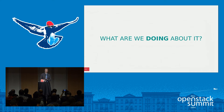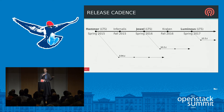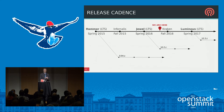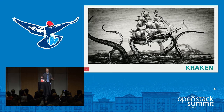The great thing about Ceph is that it's software and software can be upgraded. We have a regular release cadence — named releases every six months, in spring and fall. Spring releases are LTS releases with regular backports of bug fixes so you can run them for multiple years without upgrading. Our current release is Jewel, Kraken is coming out in the next couple of months, and Luminous will come out in the spring of next year.